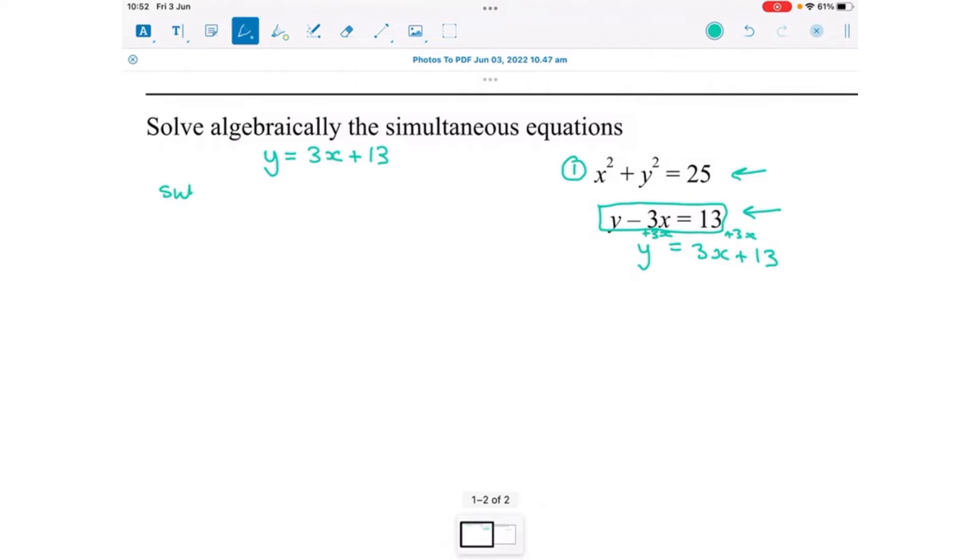So sub into one and to do that we need y squared rather than just y. So y squared, now you can't just do y squared and then put a squared on 3x squared and a squared there, that's not going to work. We need to square the whole side. So to square that we're going to do 3x add 13 squared and when we square a bracket we write it out twice. So 3x add 13 multiplied by another 3x add 13.